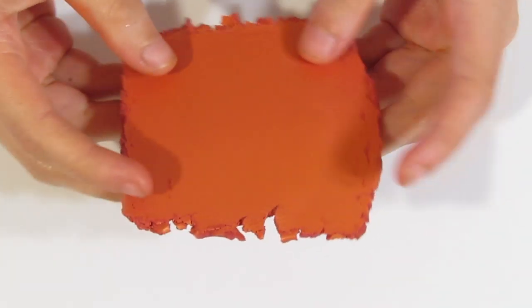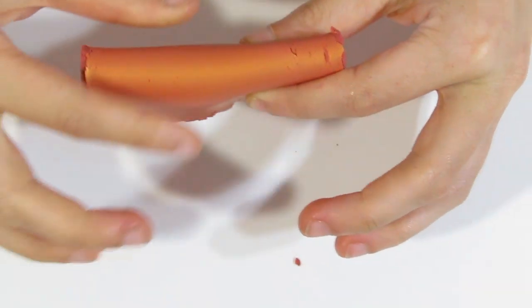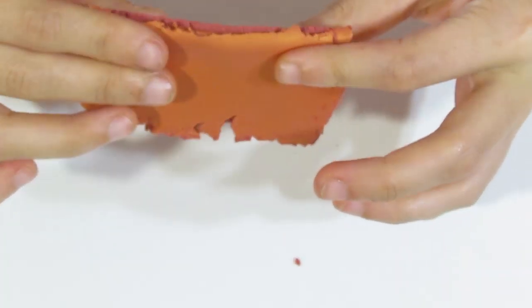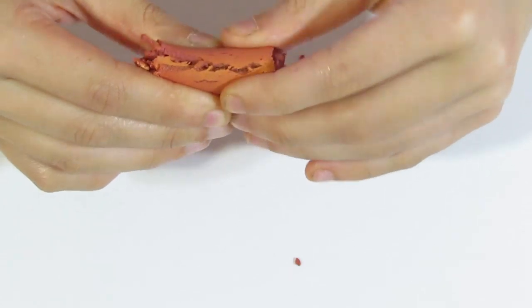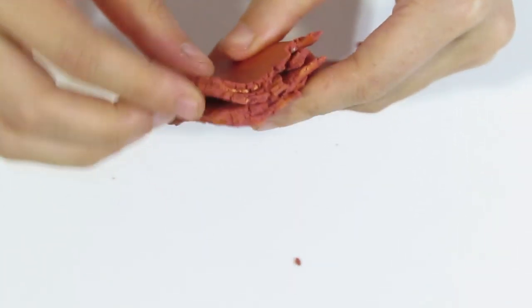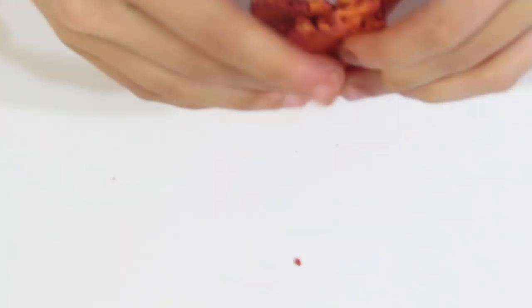Alright, so we started with really brittle clay like this where you can see it just kind of breaks when you fold. And it is really brittle so it kind of snaps and you can't get those nice clean edges because it is just going to break.